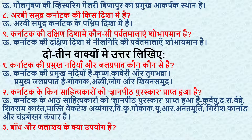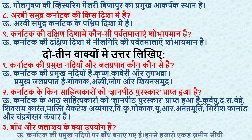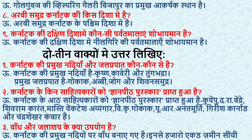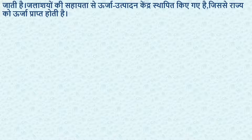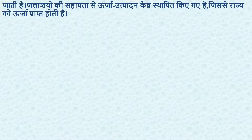Next — Bandh aur Jalashai ke kya upiyog hai? What are the uses of dams and reservoirs? Answer: Karnataka ki pramukh nadiyon par bandh banaye gaye hain, jis se hazaron ekar zameen sianchi jati hai. Jalashiyon ki sahayeta se urja utpadan kendra sthapit kiye gaye hain jis se rajya ko urja praapth hoti hai. Dams have been built on major rivers of Karnataka, irrigating thousands of acres of land, and power generation centers have been established from reservoirs to provide energy to the state.